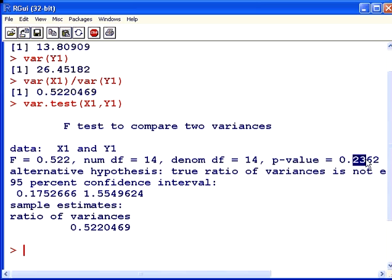It is not less than 5%. So in this case, we fail to reject the null hypothesis, and we will continue with the assumption that these data sets have equal variance.